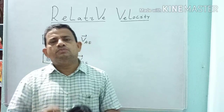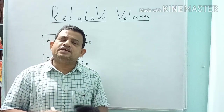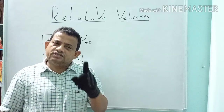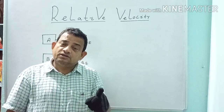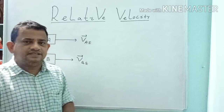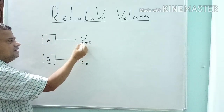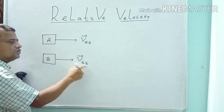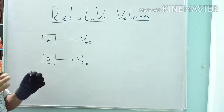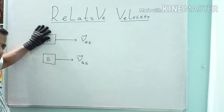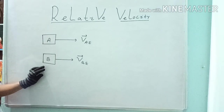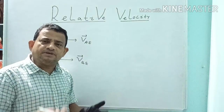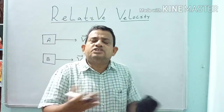Suppose you move with a velocity of 40 km per hour — it means your velocity is 40 km per hour with respect to earth. So I write VAE means velocity of A with respect to earth, E for earth. These are called subscripts. So how to find out velocity of this body with respect to that body? That is what relative velocity.